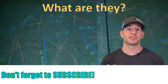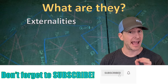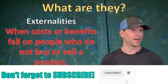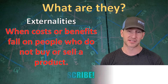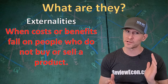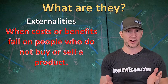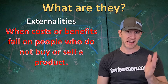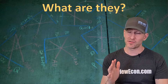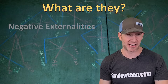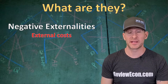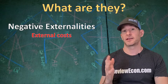First thing we've got to do is go over some definitions. An externality is a cost or a benefit of any product, good or service, that falls on people who don't buy or produce the product. Those externalities can be negative or positive. The first thing we're going to talk about is those negative externalities — those are external costs that fall on people who don't make or produce the product.